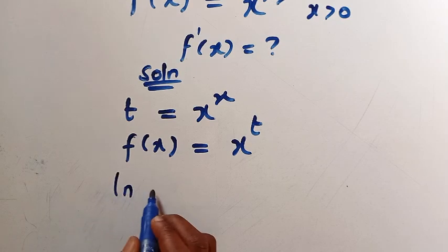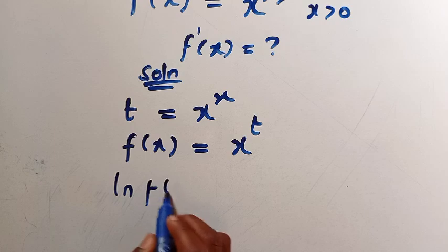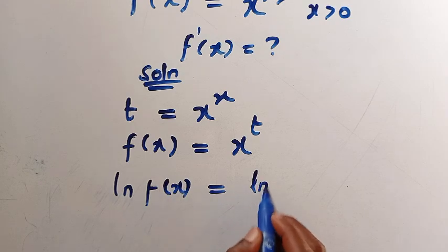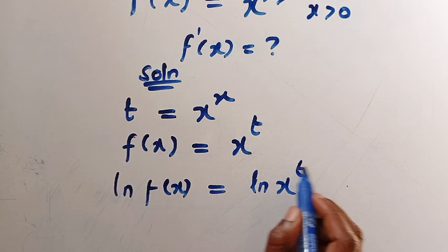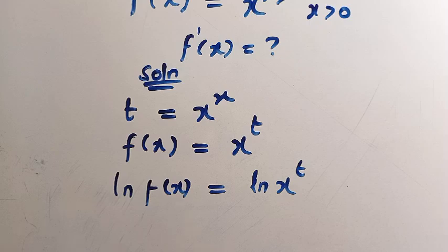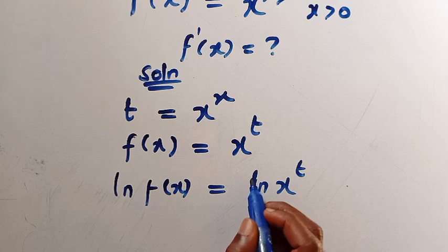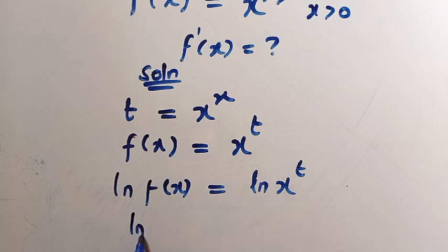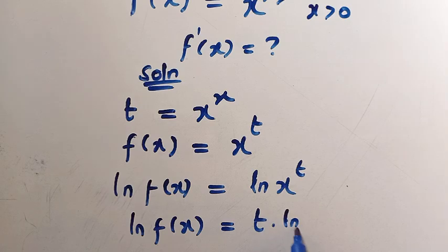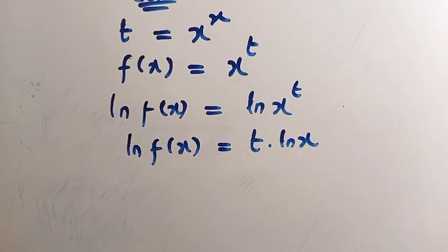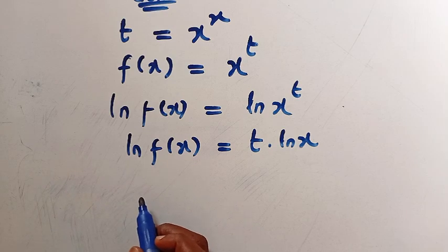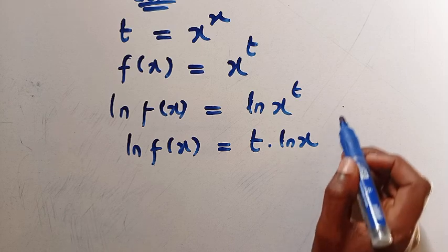Let's introduce logarithm to both sides. Introducing natural logarithm: ln of f of x equals ln of x to the power of t. By the rule of logarithm, the power t comes down and we have ln f of x equals t multiplied by ln x. In the next step we are going to differentiate this.